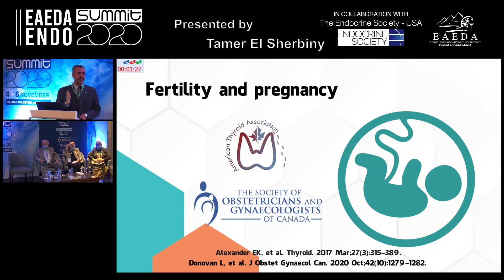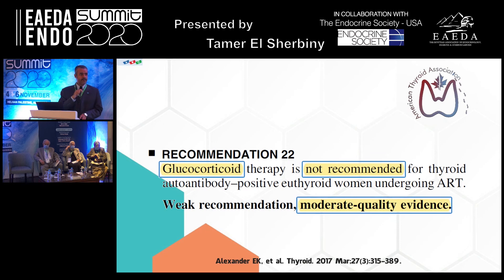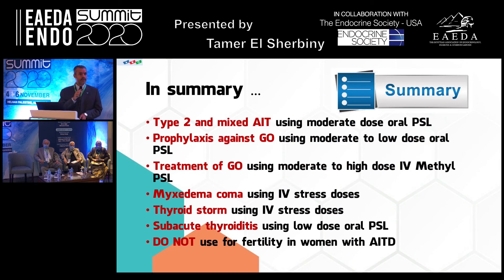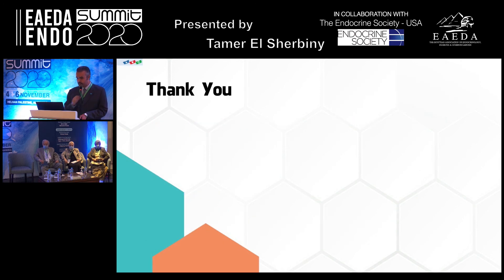OB-GYN practitioners use glucocorticoids excessively in patients with autoimmune thyroid disease. However, the American Thyroid Association recommends against the use of glucocorticoids in autoantibody-positive euthyroid women undergoing assisted reproductive techniques — moderate quality of evidence. The Society of Obstetrics and Gynecologists of Canada also recommends against the use of glucocorticoids to treat women with merely positive antithyroid antibodies. To summarize: only six indications exist — type 2 and mixed amiodarone-induced thyrotoxicosis, prophylaxis against Graves' orbitopathy, treatment of Graves' orbitopathy, myxedema coma, thyroid storm, and subacute thyroiditis. Do not use glucocorticoids for fertility or pregnancy outcomes in patients with only antithyroid antibodies.